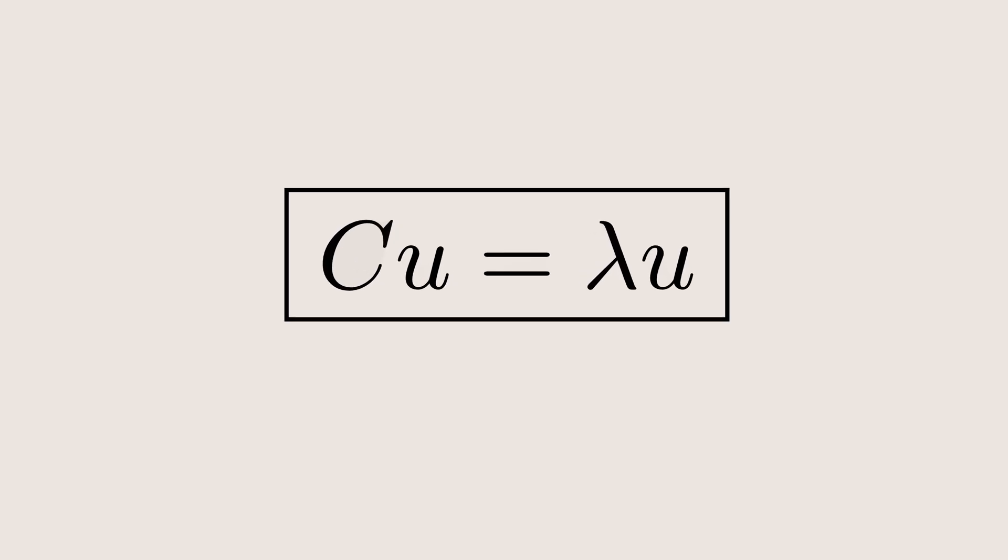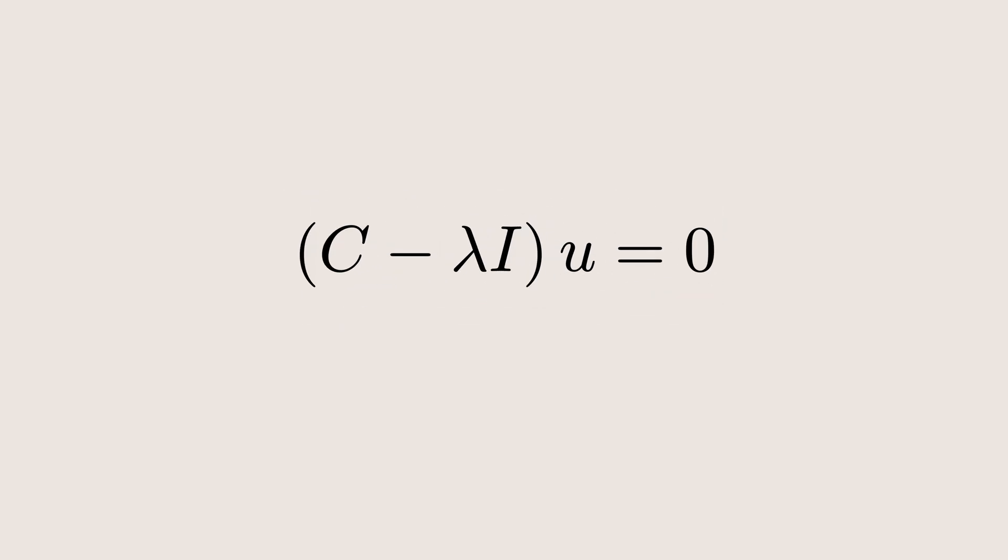Now, I am not going to teach you how to solve this equation step by step, that's a whole different story. Instead, I will provide links to some excellent videos, where you can learn the full details. Now for now, to solve this, we rearrange it into a standard form by subtracting lambda times the identity matrix from C, giving us this form. This step is essential because it allows the equation to be properly solved in the matrix form.